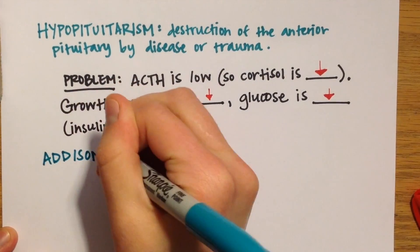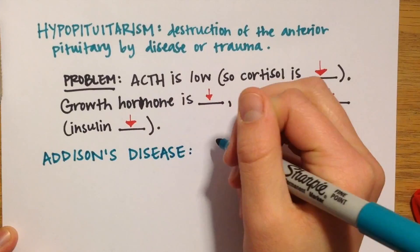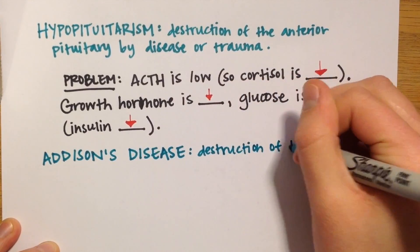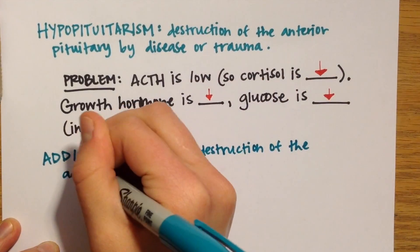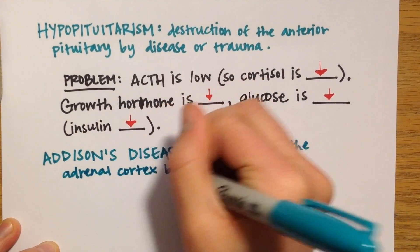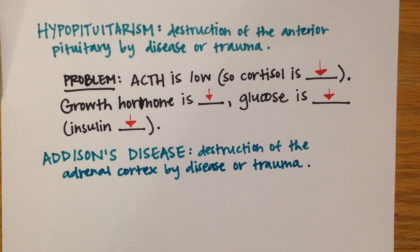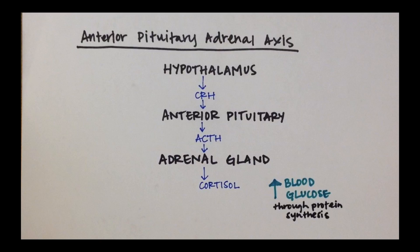Last one. Addison's disease is characterized by the destruction of the adrenal cortex by disease or trauma. Here, the cortisol is low. So what are the levels of ACTH, glucose, insulin, and growth hormone? I'm going to have you walk yourself through this one so you can really test your understanding. But remember where the destruction is occurring.